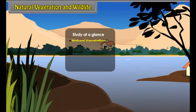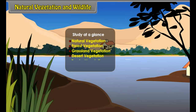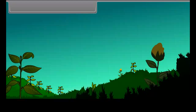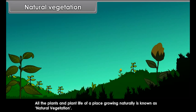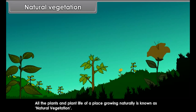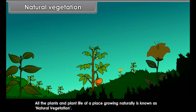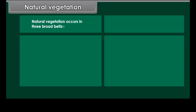Natural Vegetation: All the plants and plant life of a place growing naturally is known as natural vegetation. Natural vegetation occurs in three broad belts: forests, grasslands, and deserts.